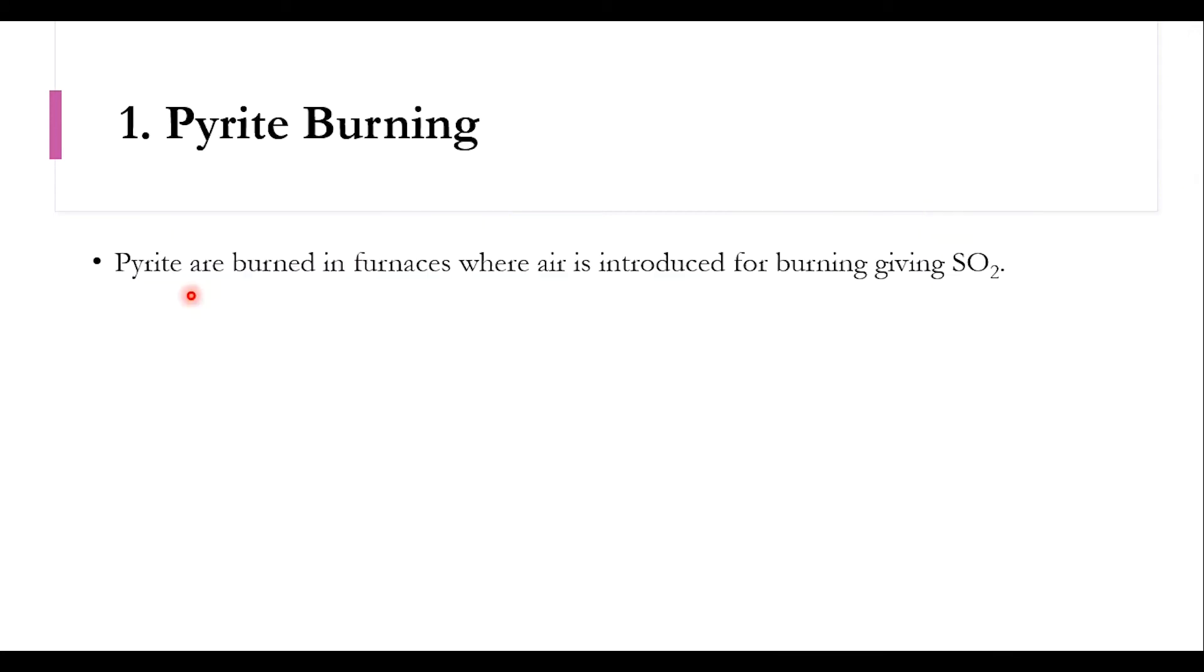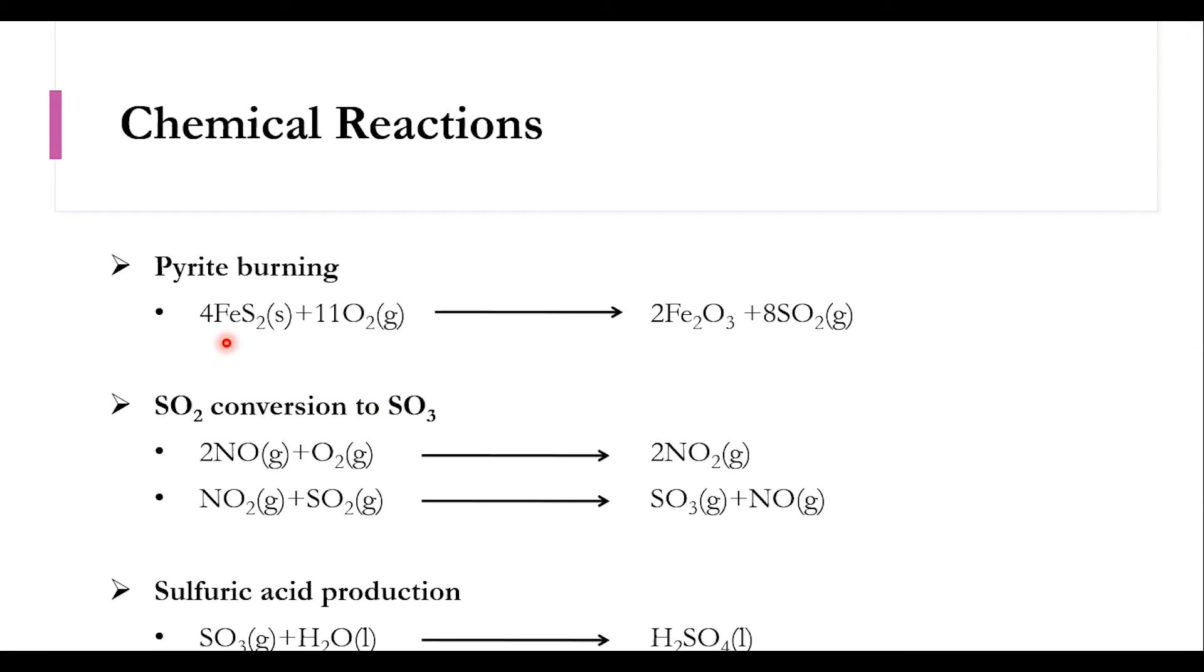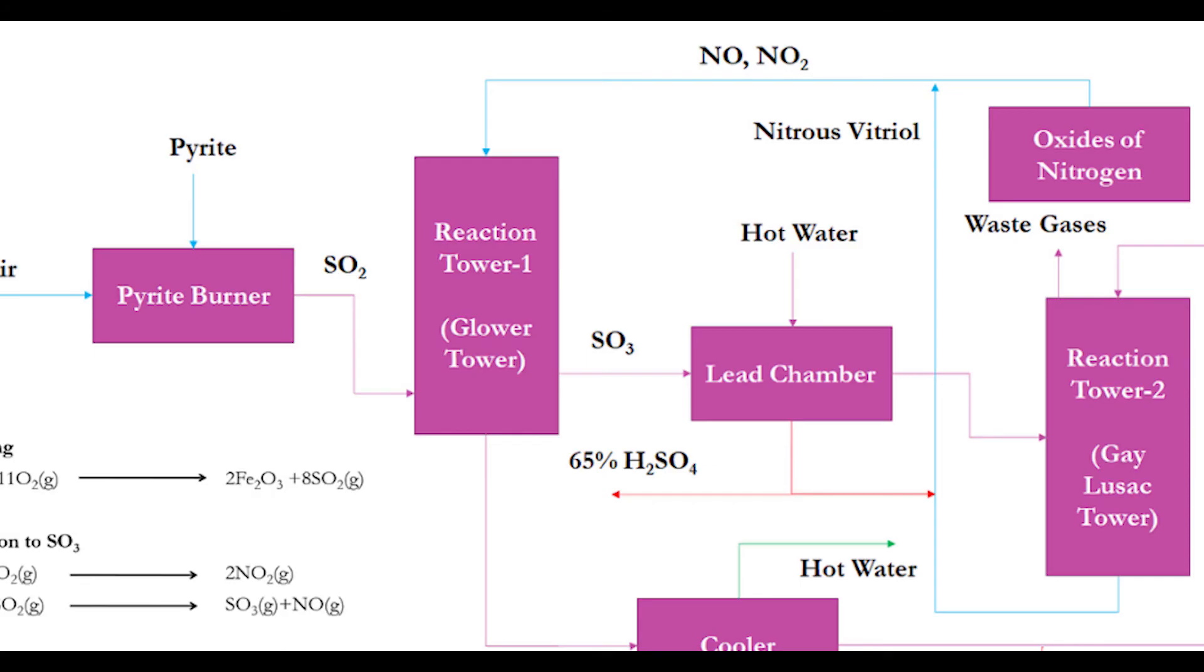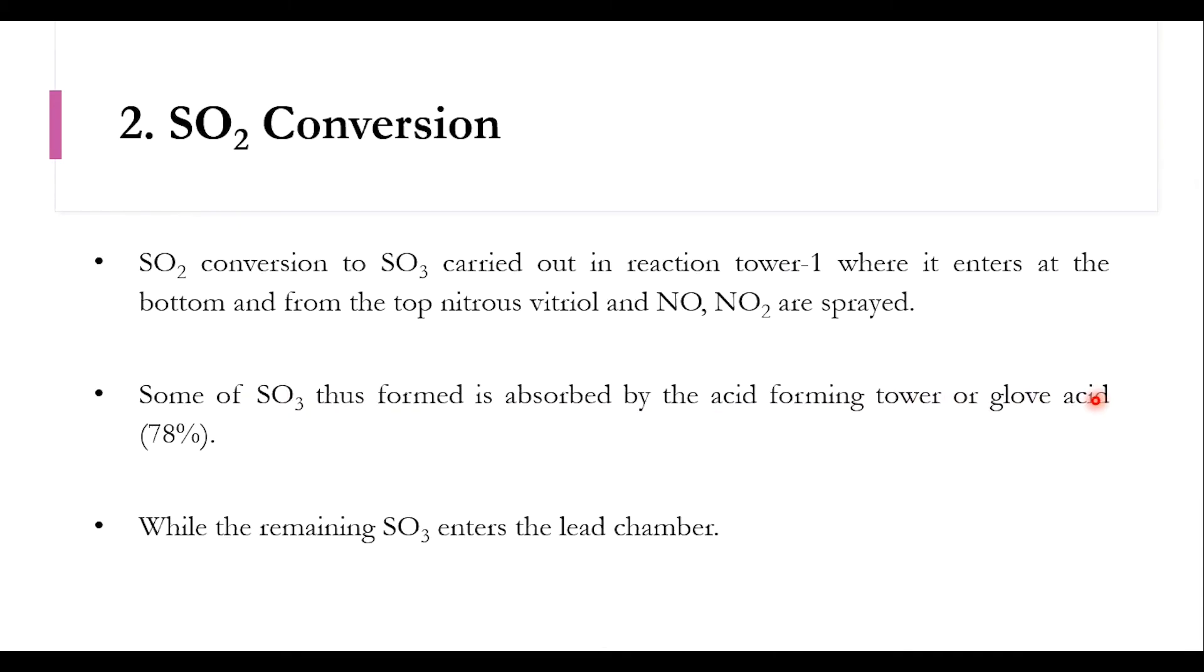This is the overall summary: Pyrite burning - pyrites are burned in furnaces giving SO2, as we've seen in the reaction FeS2 plus O2 produces Fe2O3 and SO2. In the second phase, SO2 conversion takes place in reaction tower one where it enters at the bottom, and from top, nitrous vitriol NO and NO2 are sprayed. Some of the SO3 formed is absorbed by the acid forming tower or globe acid, while the remaining SO3 enters the lead chamber.